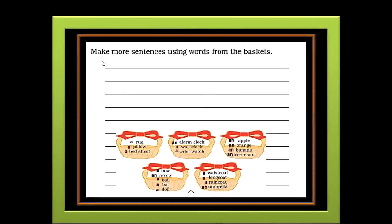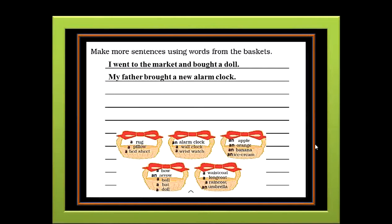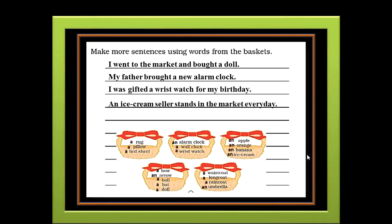Now the next exercise is to make more sentences using words from the baskets. From these five baskets you are supposed to take words and frame sentences. Here is what I have framed children: I went to the market and bought a doll. My father brought a new alarm clock. I was gifted a wrist watch for my birthday. An ice cream seller stands in the market every day. Archery is the game of shooting using bow and arrows. You may use the words given in these baskets and frame your own sentences.